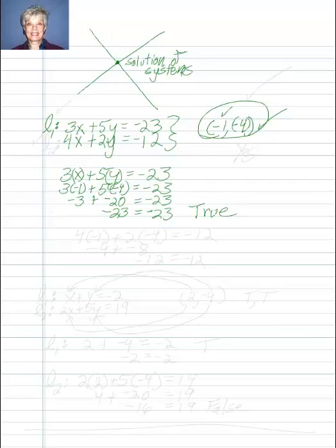So I know that the point negative 1 comma negative 4 is on line 1, but I have to find out about line 2. Alright, so I'll have 4 times negative 1 plus 2 times negative 4, does that equal negative 12? Well, I'll have negative 4 plus negative 8, and that does equal negative 12.